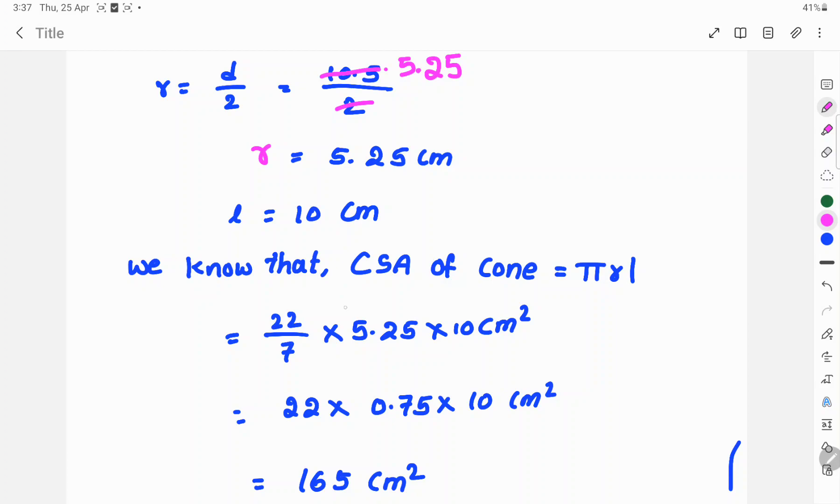CSA means curved surface area of cone is equal to πrl. π value is 22 by 7 into r, radius value is 5.25 into l, slant height is 10 cm.